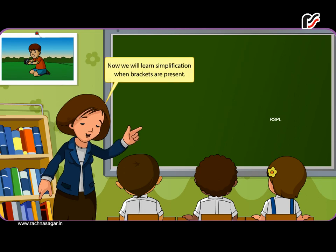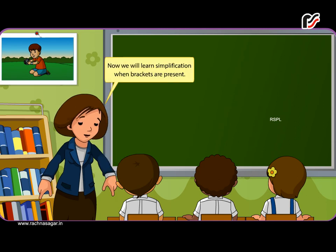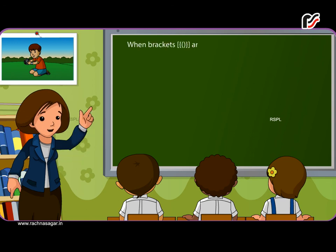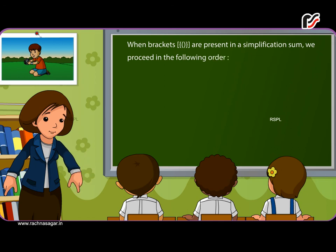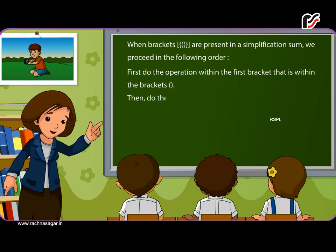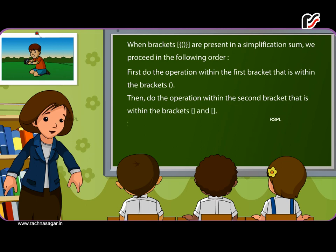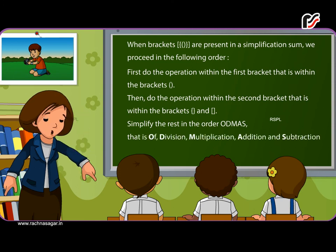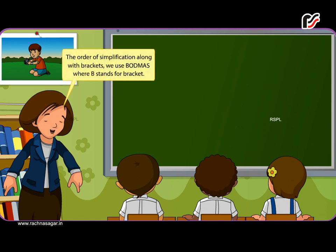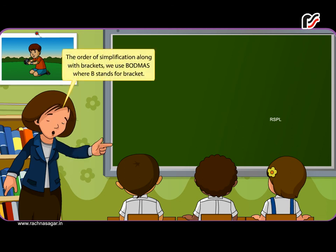Simplification when brackets are present: When brackets are present in a simplification sum, we proceed in the following order. First, do the operation within the innermost bracket (simple bracket). Then, do the operation within the next bracket (curly bracket). Then simplify the rest in the order O-D-M-A-S — of, division, multiplication, addition, and subtraction. The order of simplification with brackets is B-O-D-M-A-S, where B stands for bracket.